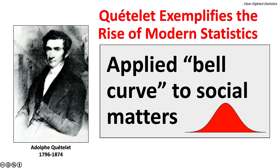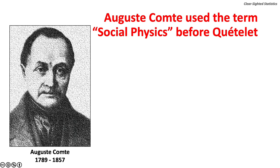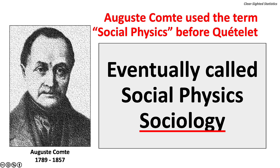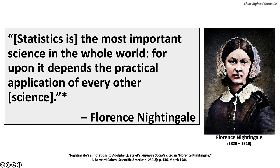Quetelet was among the first to apply the bell curve to social matters. The bell or normal curve is the central topic of statistics and will be discussed in detail in future lectures. Auguste Comte used the term social physics before Quetelet but disagreed with his method of collecting data, and eventually changed the name of the discipline to sociology. Florence Nightingale, the famous 19th century English nurse, social reformer, and statistician, wrote: 'Statistics is the most important science in the whole world, for upon it depends the practical application of every other science.'